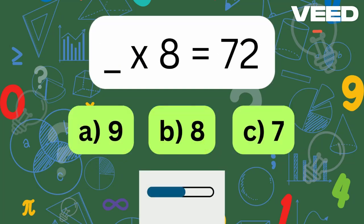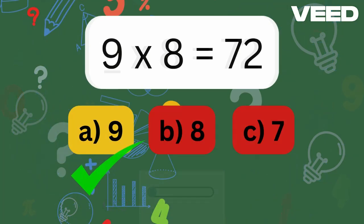What times 8 is 72? 9 times 8 is equal to 72.